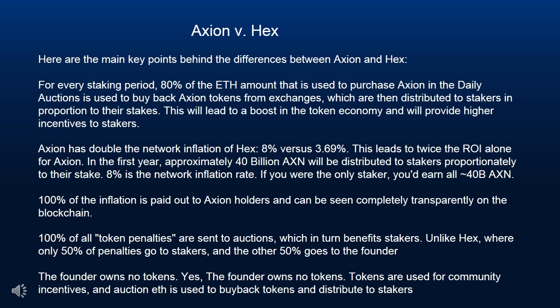100% of the inflation is paid out to Axion holders and can be seen completely transparently on the blockchain. 100% of all token penalties are sent to auctions, which in turn benefits stakers. Unlike HEX, where only 50% of penalties go to stakers and the other 50% goes to the founder, the Axion founder owns no tokens. Tokens are used for community incentives, and auction ETH is used to buy back tokens and distribute to stakers.